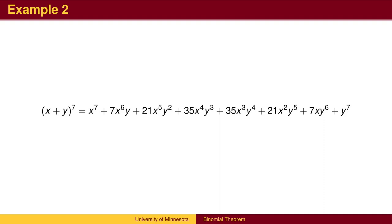Here is the full expansion of x plus y to the seventh using the seventh row of Pascal's triangle. Notice that the exponents on x start at 7 and go down by 1 each time, and the exponents on y go up by 1 each time.